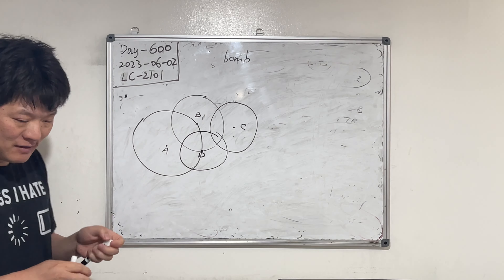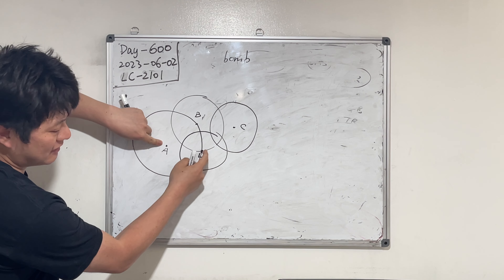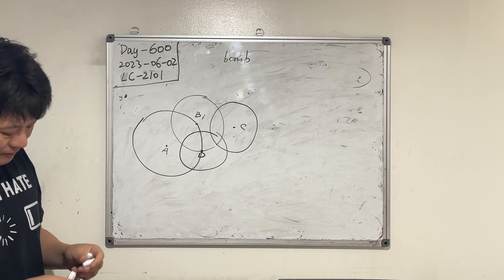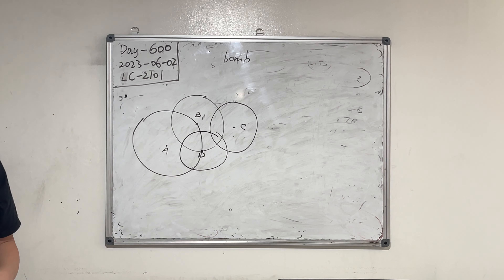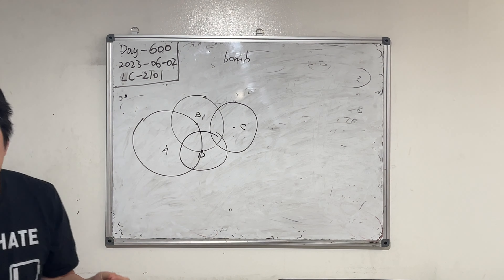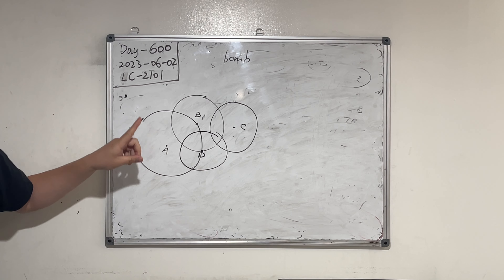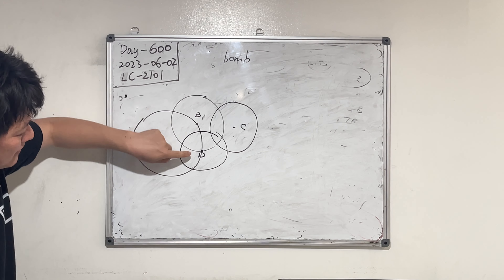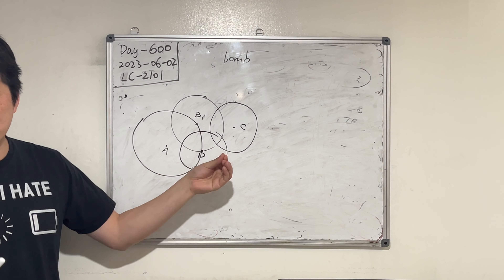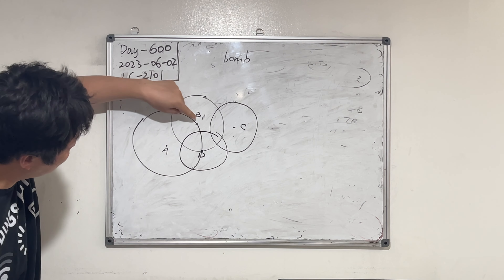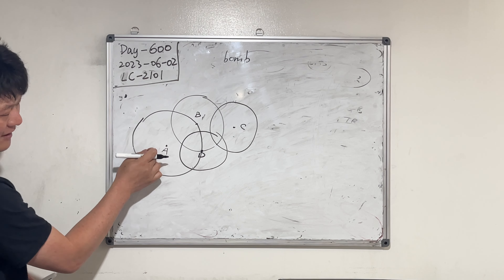So A can ignite B, and then B ignites D — it's connected. We want to find out the maximum number of bombs that can be ignited by igniting only one bomb. In this case, if we ignite A, then B and D also ignite, but not C. We can also ignite B, but it doesn't reach A, so it only reaches D.